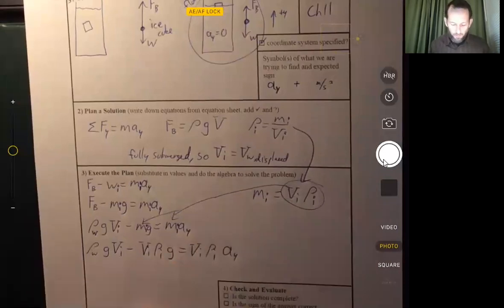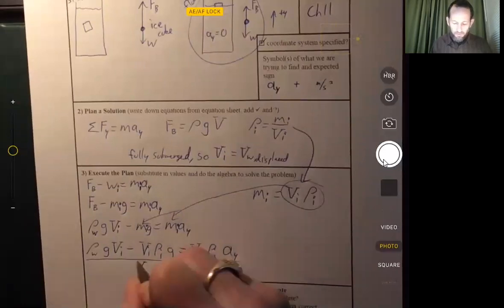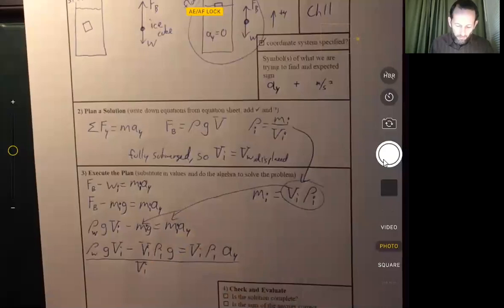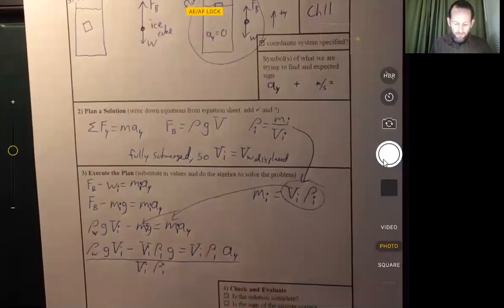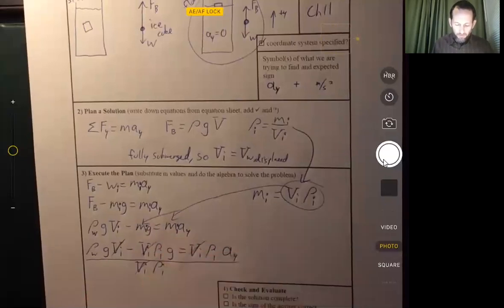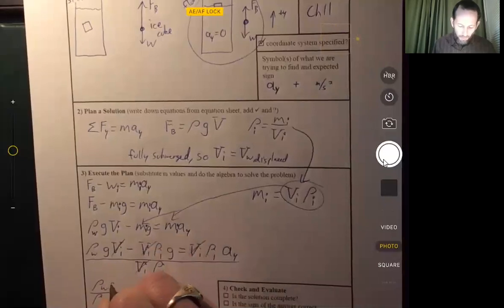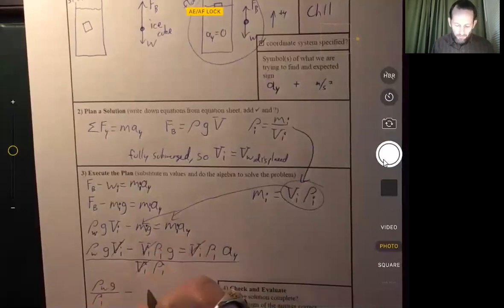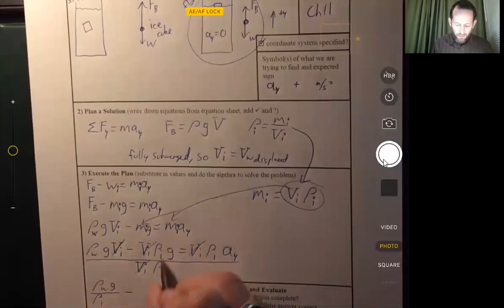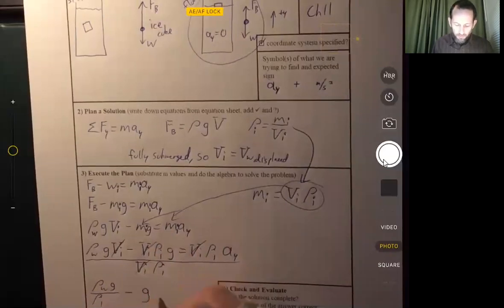And now we're getting somewhere because now we can divide through by the volume of the ice cube. And we might as well go ahead and divide by the density of the ice cube. So volume of ice cube cancels out because it's in every term. And then we're left with density of water over density of ice cube times G minus, so density of ice cube cancels out, so we're left with G there.